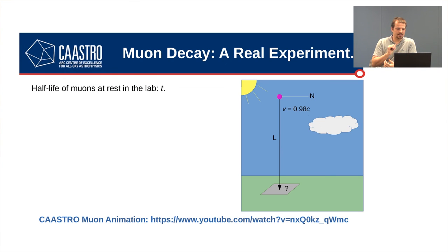This is a real experiment. We don't have much time to go through it. What I'm going to do is I'm going to skip this example because you can see down the bottom there's actually an animation online which will show you all about this example. It's done by CAASTRO. If you look up CAASTRO muon decay, it will go through this example. I don't have time to go through it now. But it's actually a really helpful example to look at. And it will show you how things work out from both frames of reference in terms of the physical results.